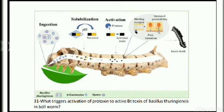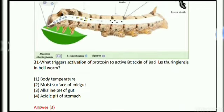Before solving this question, we need to discuss a few things. We know that BT toxin is extracted from a strain of Bacillus thuringiensis and is used for insecticidal purposes against insects that cause devastation of crop plants, most often cotton crops. When the insect takes the leaf of the cotton plant, the proto forms of these toxin proteins become activated to their original form by the pH of the midgut.